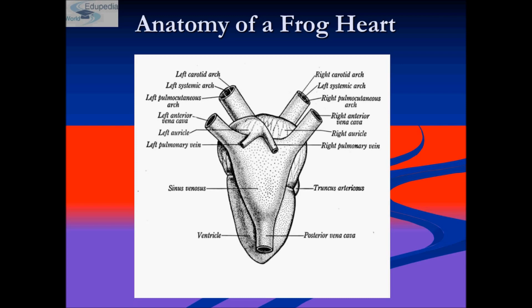The deoxygenated blood is sent to the right auricle from various organs in the frog's body through blood vessels and veins — this is blood being drained from the organs, thus starting the cleansing process. Then the oxygenated blood comes from the lungs and skin and enters the left auricle. This also serves as a gaseous exchange in most amphibians.